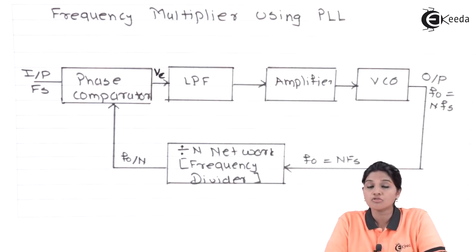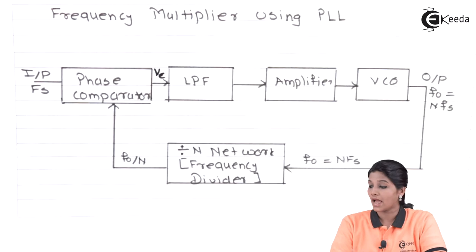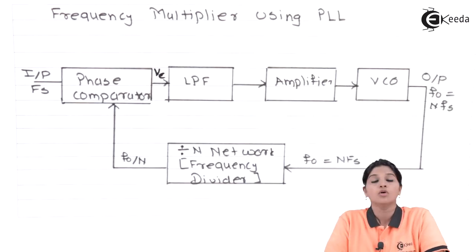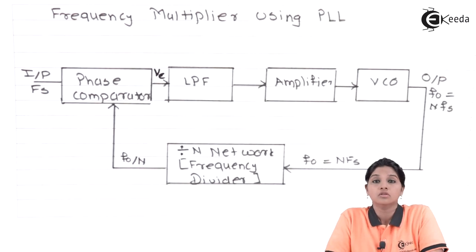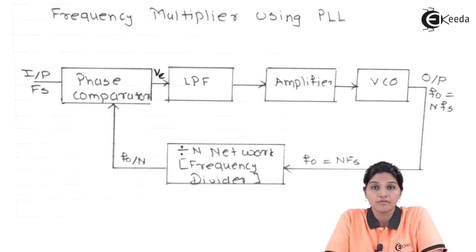Here, the voltage controlled oscillator provides an output signal as N times FS, where N is the multiplication factor. That means the output of VCO is N times larger than the input frequency FS. The output of VCO is NFS, which is N times larger than the input frequency FS.